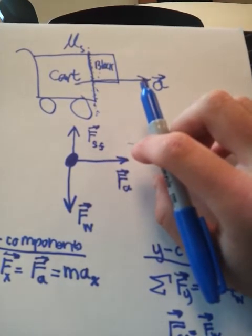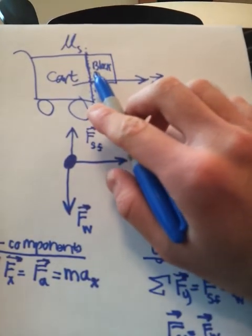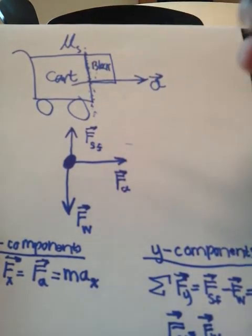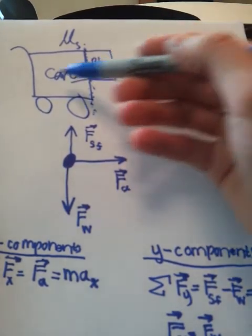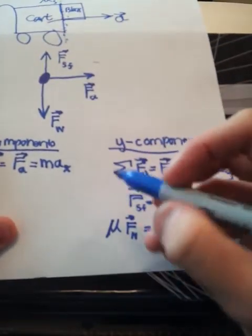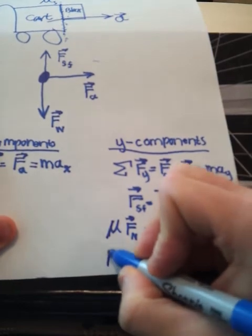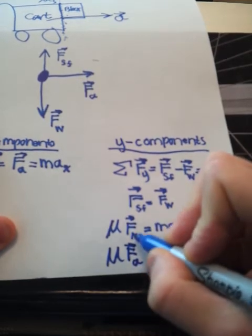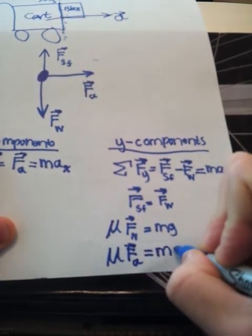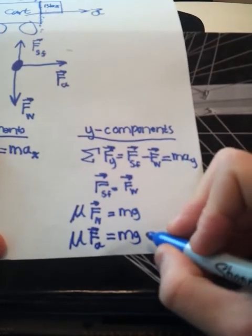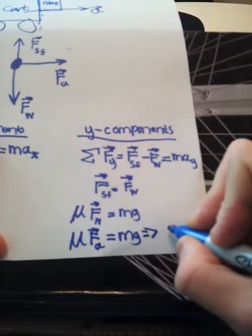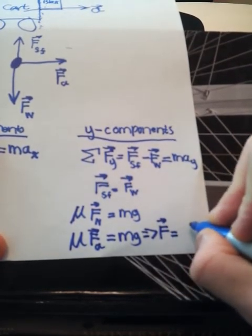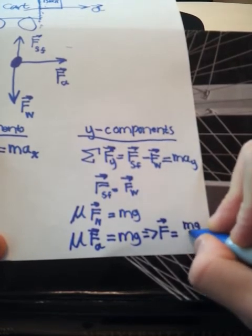Another way to think of normal force is the force that's keeping the block from breaking through the cart. So we can rewrite this and say that mu times the applied force equals mg, since the applied force and the normal force are the same. Then we solve for the applied force to get: F applied equals mg divided by mu.